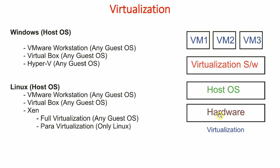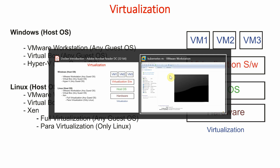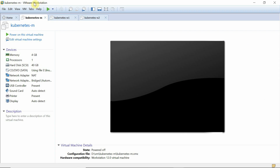In my case the hardware is an i7 with 16 GB RAM and an SSD hard disk. The host operating system is Windows. On top of that we can install virtualization software — it could be VMware Workstation, VirtualBox, or Hyper-V. In all of these we can install any operating system, Linux or Windows. This is my virtualization solution, VMware Workstation, and these are three Linux-based VMs.